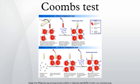By diluting a serum containing antibodies, the quantity of the antibody in the serum can be gauged. This is done by using doubling dilutions of the serum and finding the maximum dilution of test serum that is able to produce agglutination of relevant RBCs.